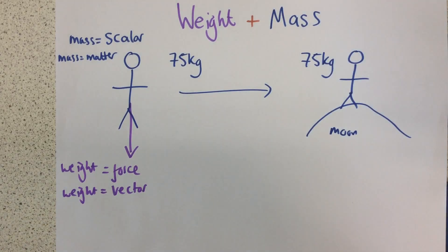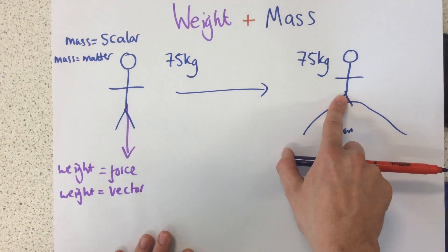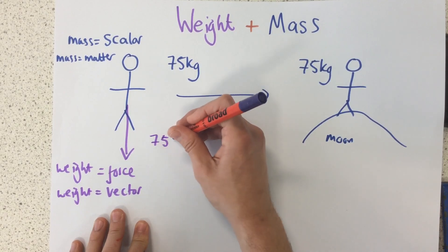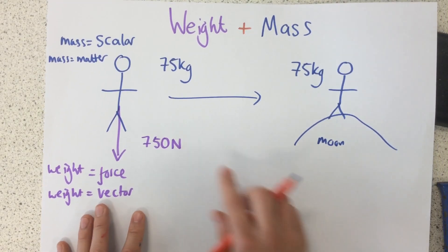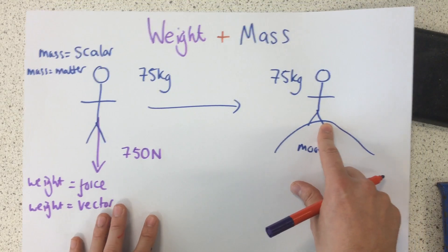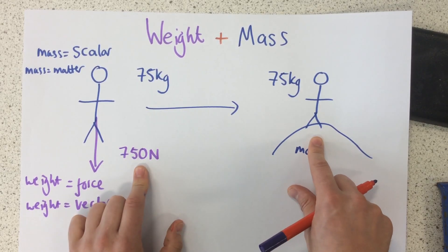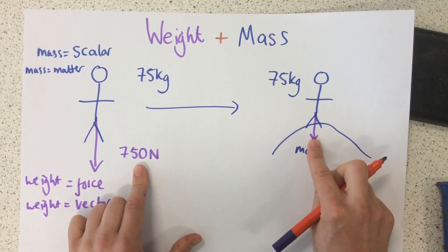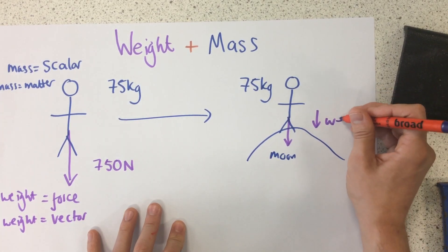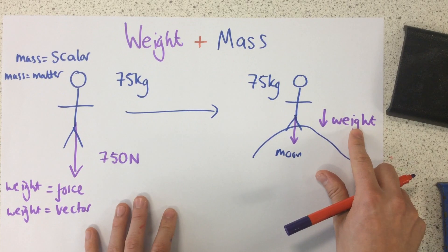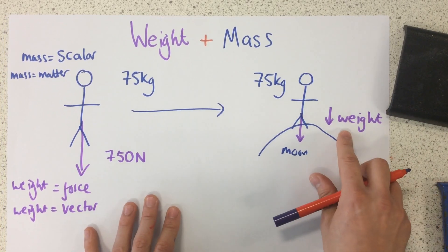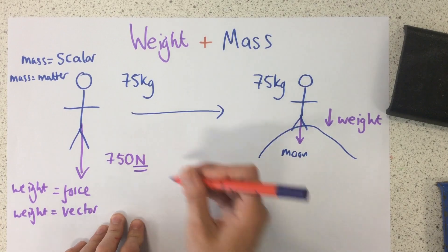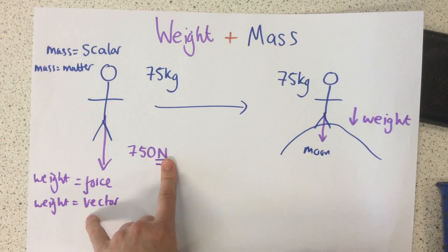Let's follow the same example and see how this person's weight would change if they went from earth to the moon. This person's weight on earth is 750 newtons. When they go to the moon, the moon has a lower gravitational field strength than the earth. As a result, the force pulling them down towards the surface of the moon is less, so their weight will decrease. Weight is measured in newtons because it's a force.